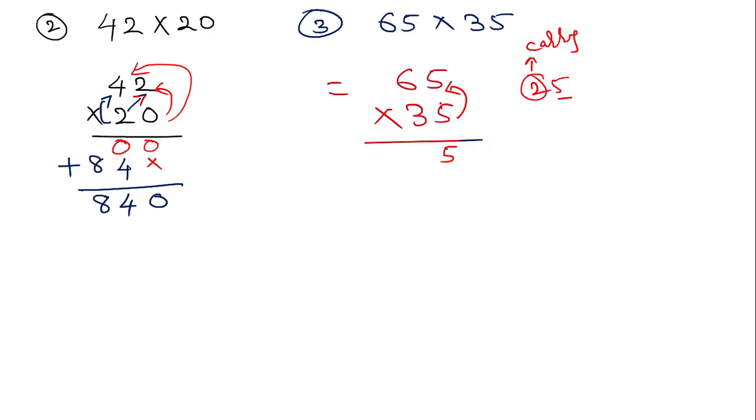Then I multiply this 5 to the 6. 5 times 6 is 30. So 3 plus this carry, plus this carry 2, we got 32. I write here 32. Then I put our cross here because first number is completed.